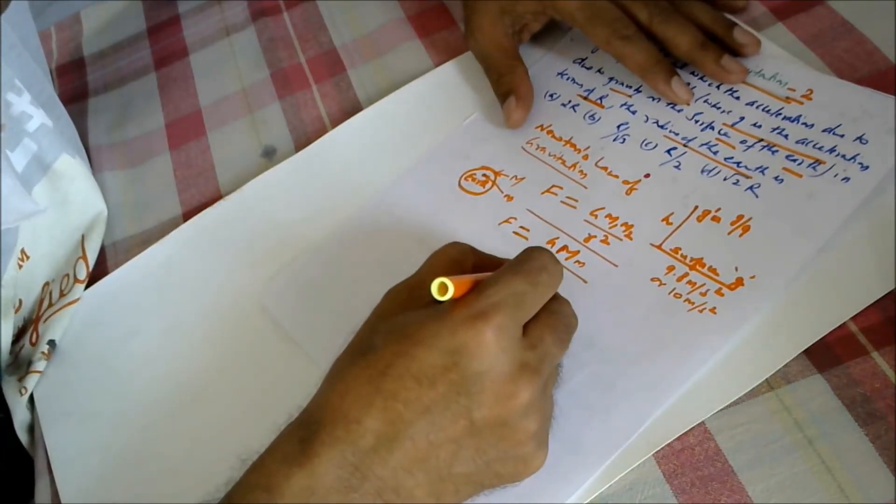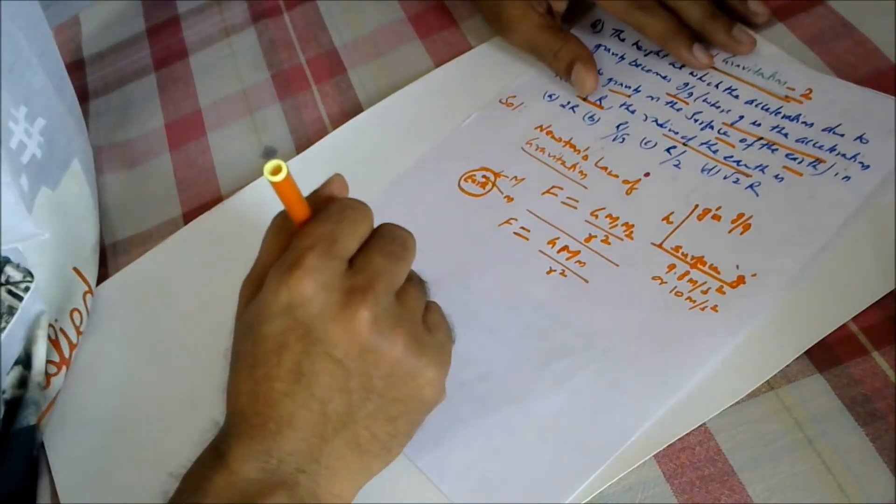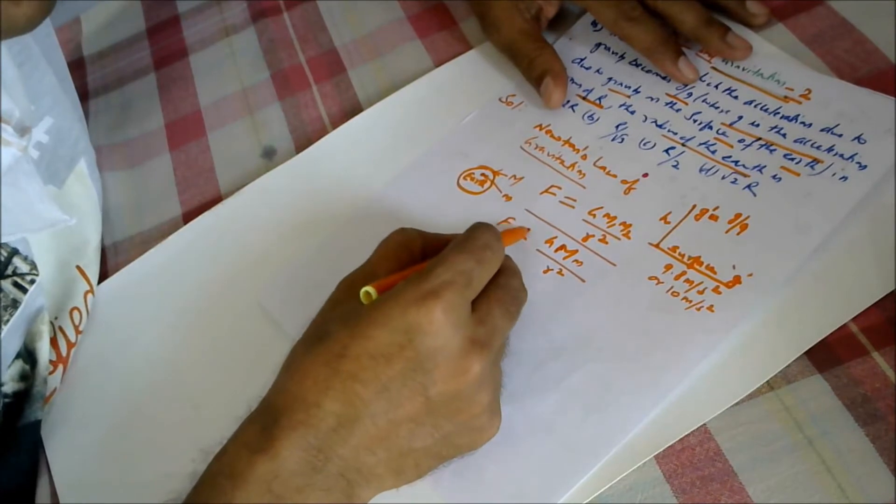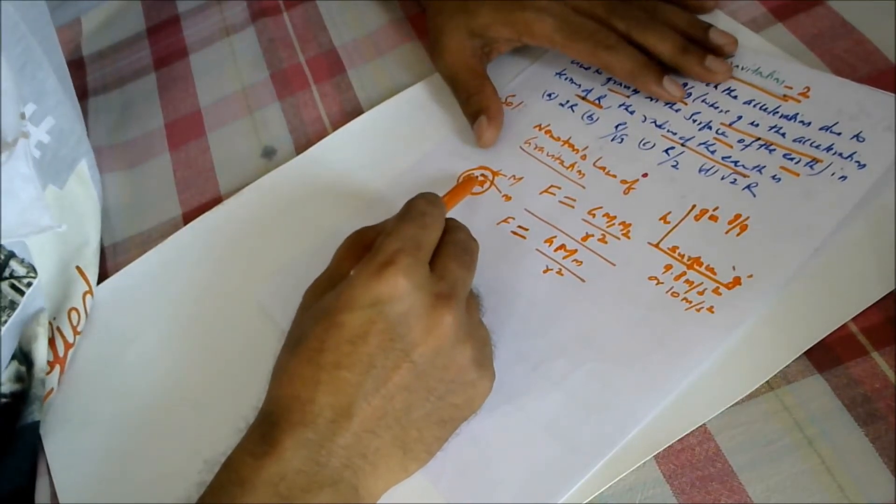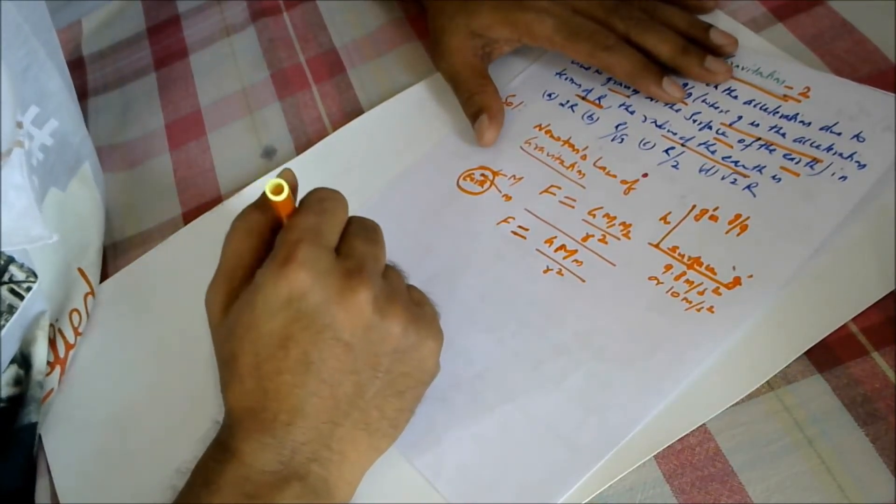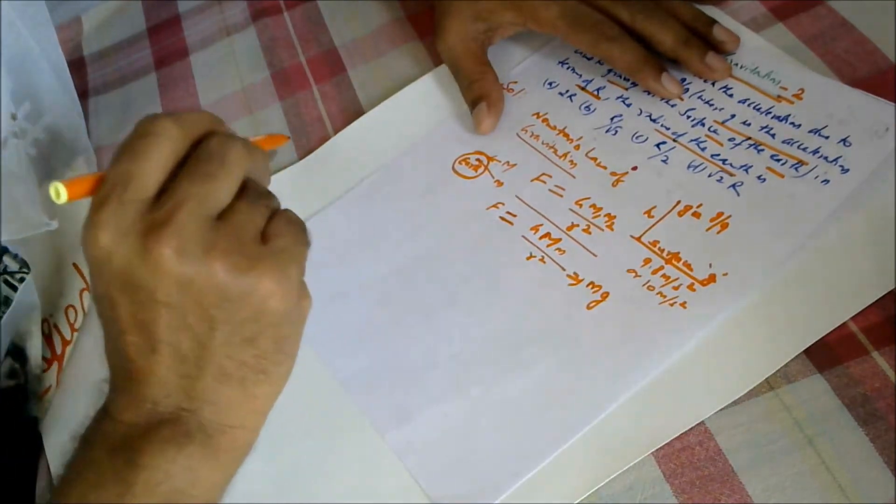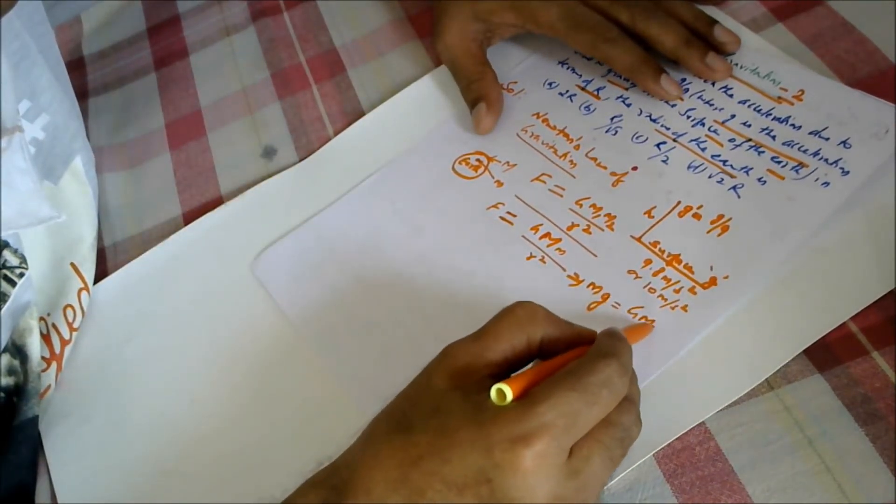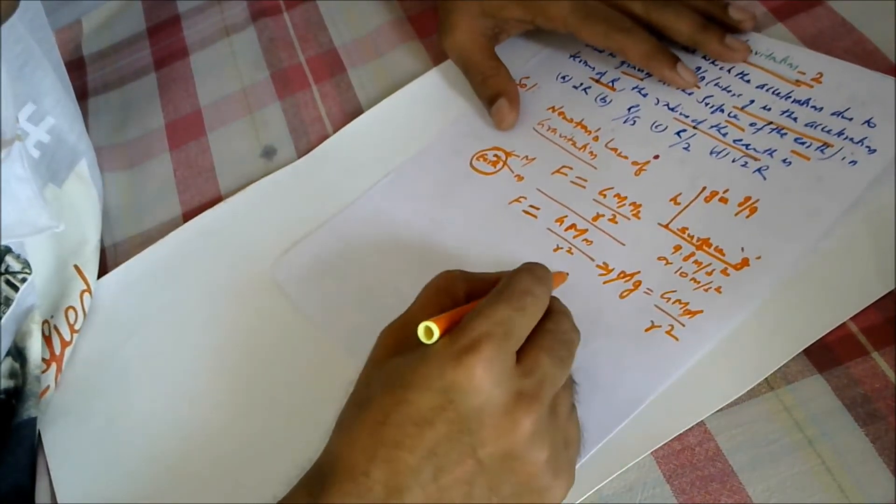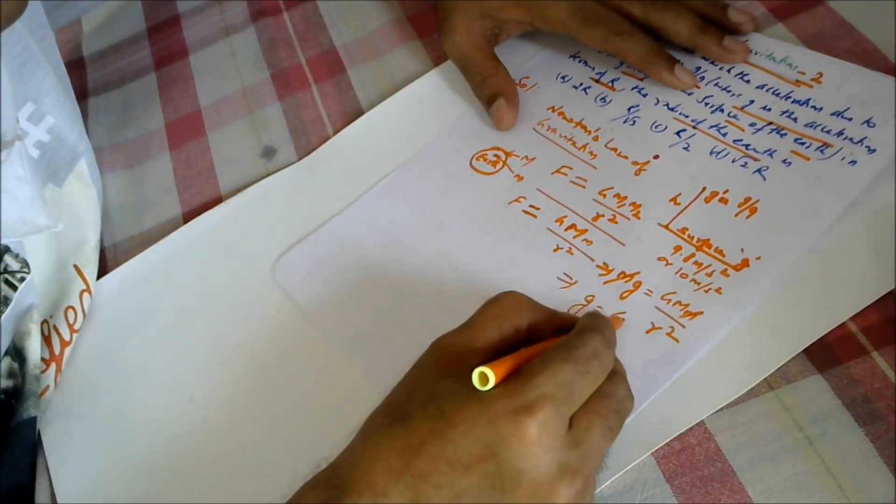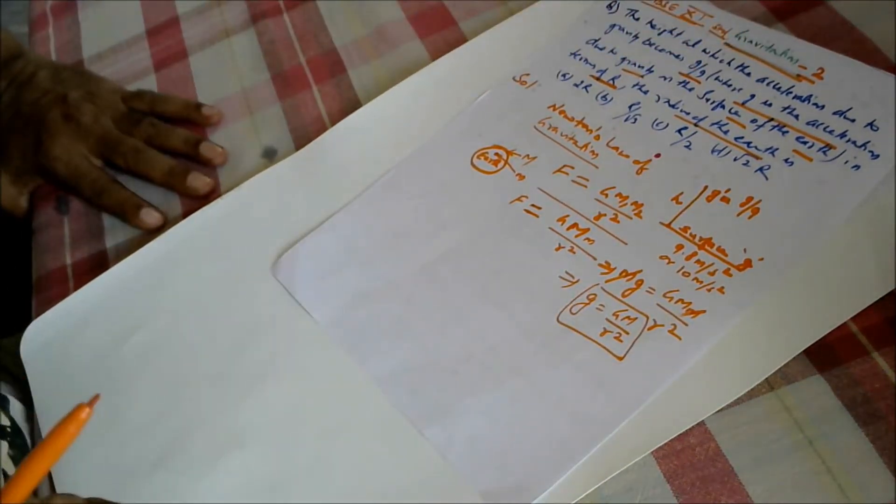Now as per Newton's law of gravitation, the force of attraction between them is capital M and small m, and the distance between them is r. This force will be equal to the force exerted on this object due to g, which will be mg and GMm by r square. So this m will get cancelled, and we get g equals GM by r square, which is the formula utilized to find the value of g.